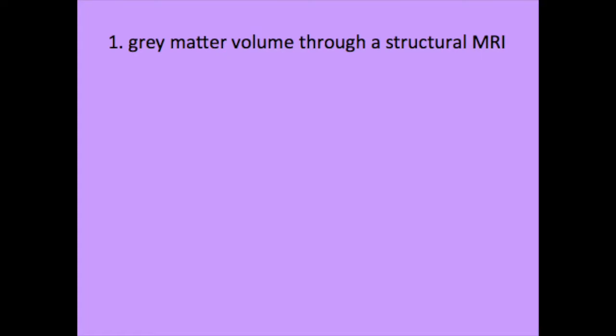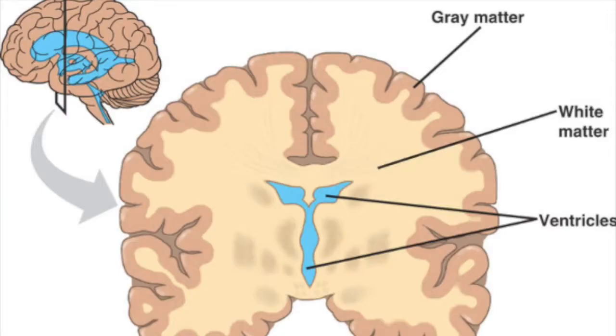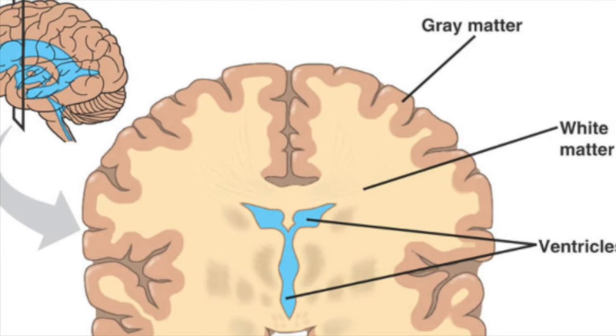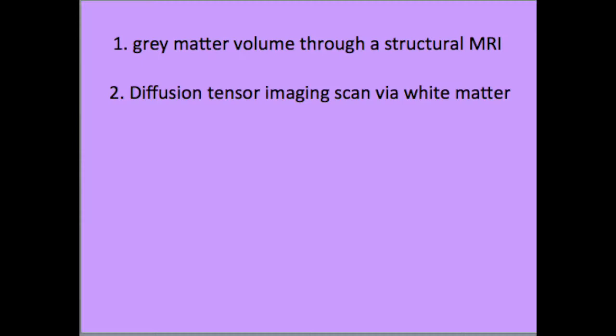The first measure was gray matter volume through a structural MRI. Gray matter is the gray outer area of the brain. This area gets its color due to being densely packed with the cell bodies, dendrites, and terminal buttons of a neuron.